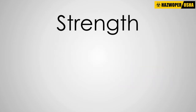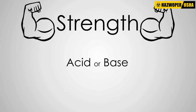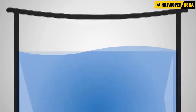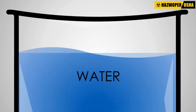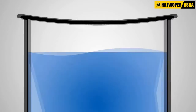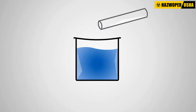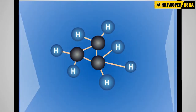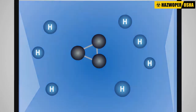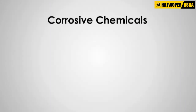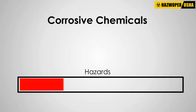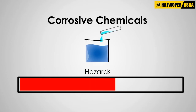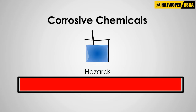The strength of an acid or base is determined by its dissociation levels in water, which means that if 100% of an acid's hydrogen ions break free, it is a very strong acid. While corrosive substances present many potential hazards in and of themselves, the hazards are expanded when corrosives mix with other substances.